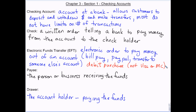The payee is the person or business that gets the money, and the drawer is the person that owns the account and is paying the money. So whenever you go to the store and buy a pack of gum, the 7-Eleven is the payee and you're the drawer.